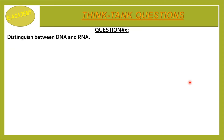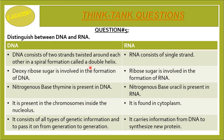Question No. 5: Distinguish between DNA and RNA. DNA consists of two strands twisted around each other in a spiral formation called a double helix — it is a double-stranded structure. RNA consists of a single strand — it is a single-stranded structure. Deoxyribose sugar is involved in the formation of DNA; ribose sugar is involved in the formation of RNA. The nitrogenous base thymine is present in DNA; uracil is present in RNA. DNA is present in the chromosome inside the nucleus; RNA is found in the cytoplasm. DNA consists of all types of genetic information and passes it from generation to generation.